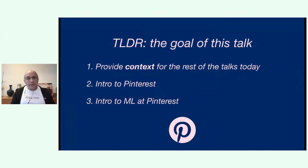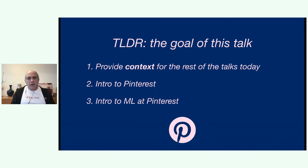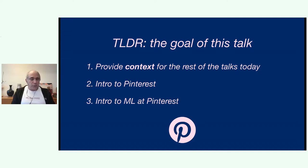I want to give you a broad overview — the TLDR. I'll provide context in the form of an introduction to Pinterest itself, with some important insights that at first glance may not be obvious. Then I'll give an introduction to some of the ML work at Pinterest. This is a broad overview — I don't want to steal the thunder of the other talks later in the day. This is from my point of view from ATG and is definitely not exhaustive of all the great machine learning work going on at Pinterest.